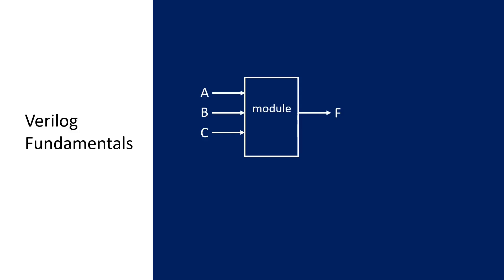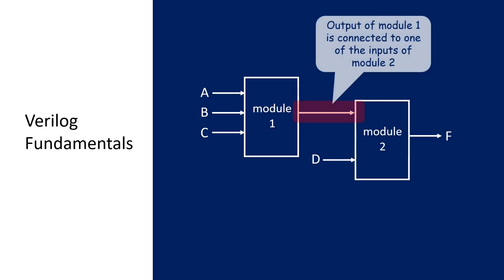This is how the port looks like. These are the input ports, and this is an output port. This is how the output port of module 1 is connected to one of the inputs of module 2.